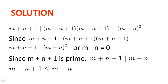Now, because m plus n plus 1 divides m plus n plus 1 multiplied by m plus n minus 1, we have that either m minus n squared is equal to zero, meaning m equals n, or m plus n plus 1 divides m minus n squared. If m is equal to n, then m plus n plus 1 divides m plus n plus 1 multiplied by m plus n minus 1 for any n. So we are left to show that m plus n plus 1 cannot divide m minus n squared, which would imply that m must equal n.